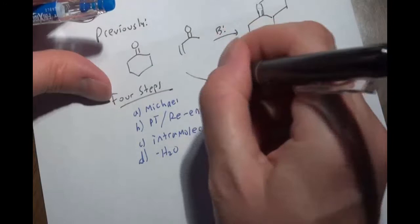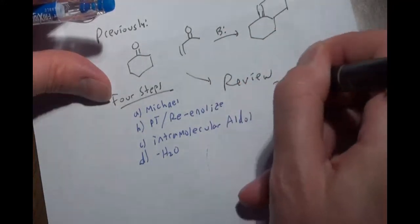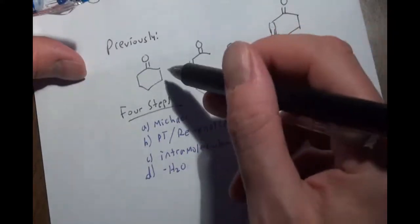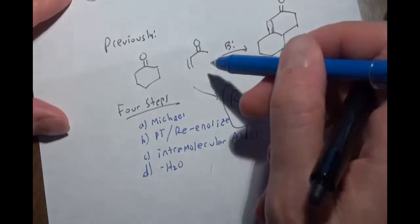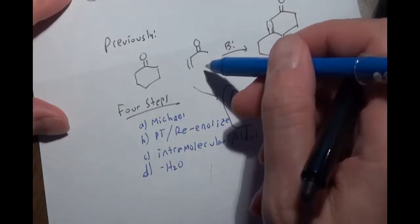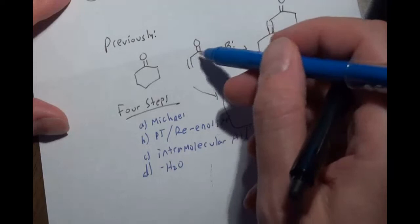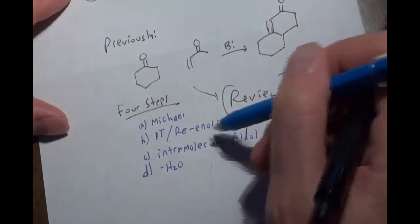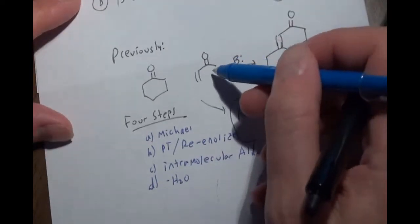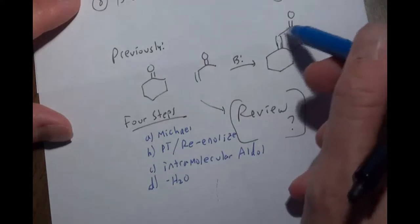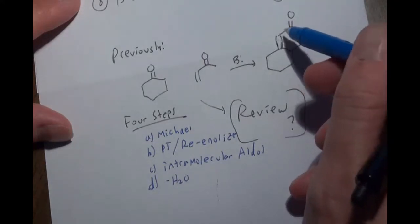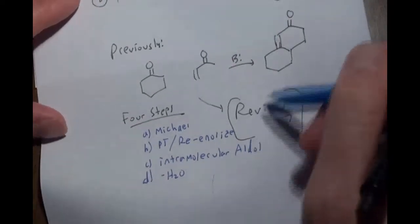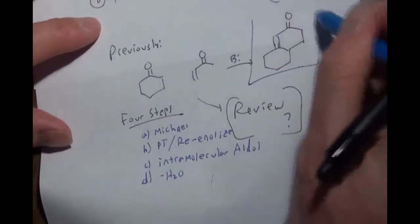You can review the Robinson steps: do the Michael — base takes proton, makes enolate, enolate attacks. Then you have an enolate on one side and the proton transfer re-enolization moves the enolate from one side to the other. Then it swings down and does the intramolecular aldol. Loss of water gives the product. Critical note: there must be a CH on the other side of the Michael acceptor — you need a CH there for a Robinson to work.